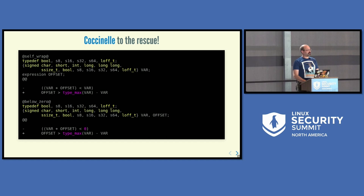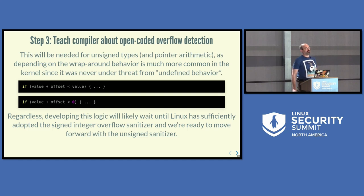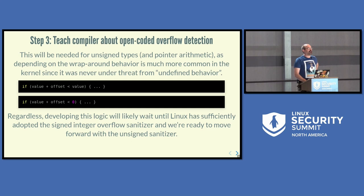There are a bunch of these patterns in the kernel, so I like to use Coccinelle, the semantic patching tool spatch. I have a rule that looks for 'var + offset < var' or 'var + offset < 0' and replaces them. But again, we're still going to need to teach the compiler about this situation, especially for unsigned types. This will probably wait until we've nailed down signed integer overflow working reliably first — but it's on the list.